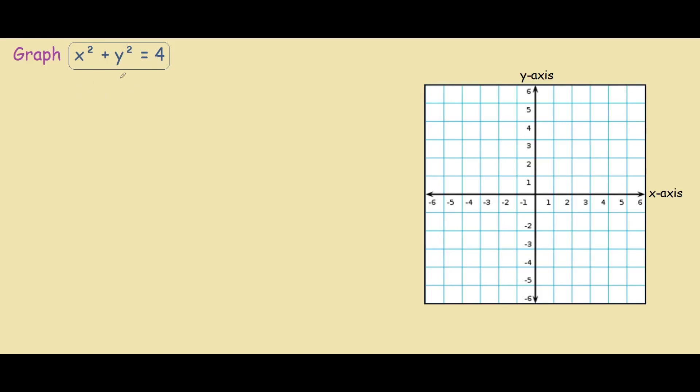First thing to know is that this is the general form for the equation of a circle where we have x squared plus y squared equals r squared, where r stands for the radius.